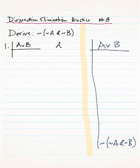And since the sentence we're trying to derive is the negation of some sentence—in other words, the main logical connective is the tilde—we're going to have to use the negation introduction rule.